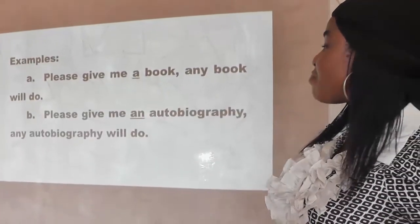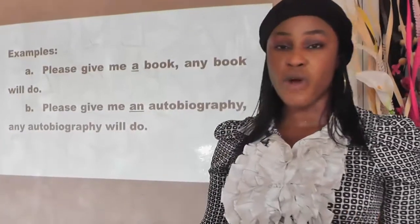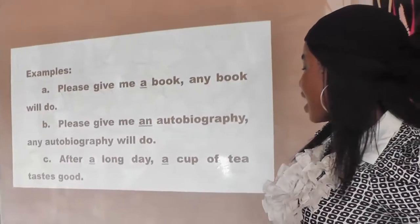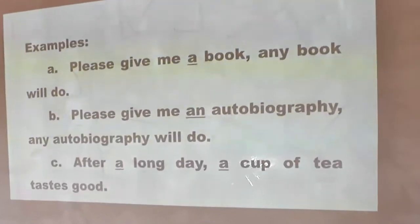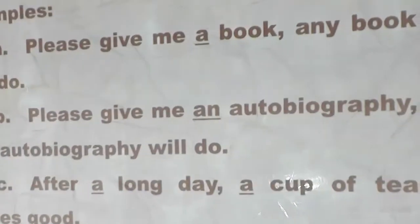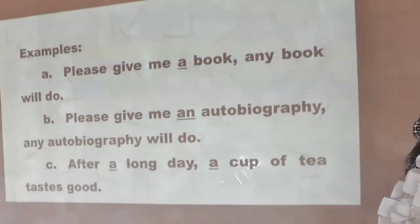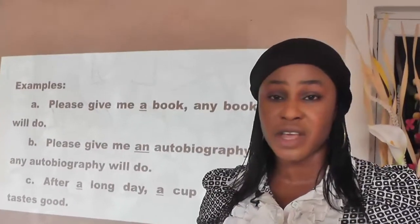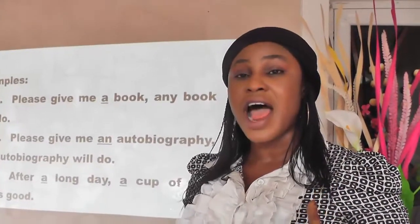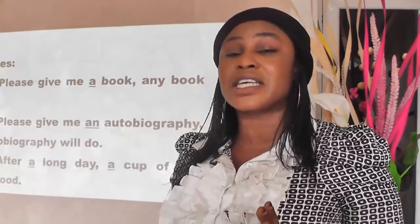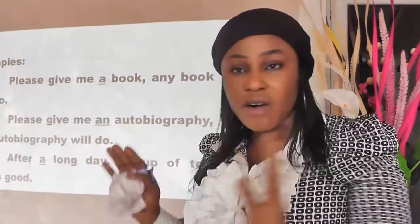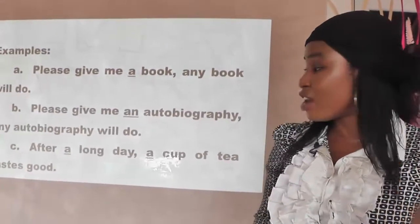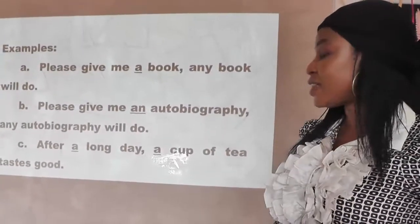Another example: 'Please give me an autobiography. Any autobiography will do' — you have not specified any autobiography. Then: 'After a long day, a cup of tea tasted good.' The article 'a' tells us that any day could be long and any cup of tea could taste good — it has not specified. Compare this with 'After the long day, the cup of tea tasted particularly good,' which specifies a particular day and a particular cup of tea.